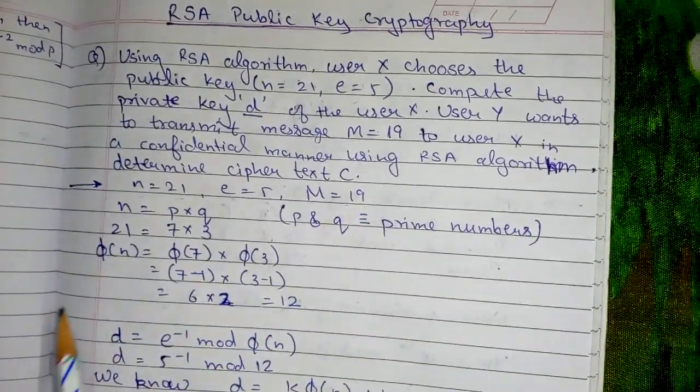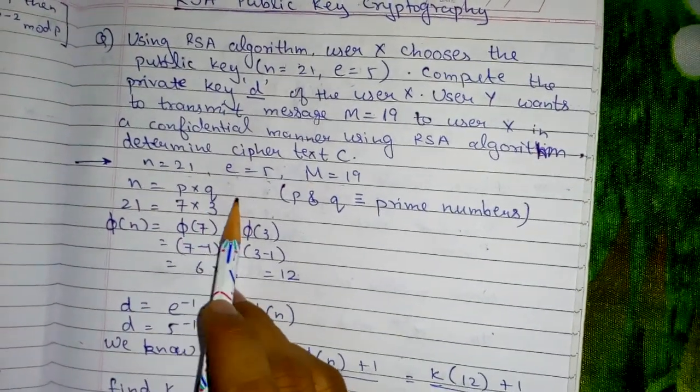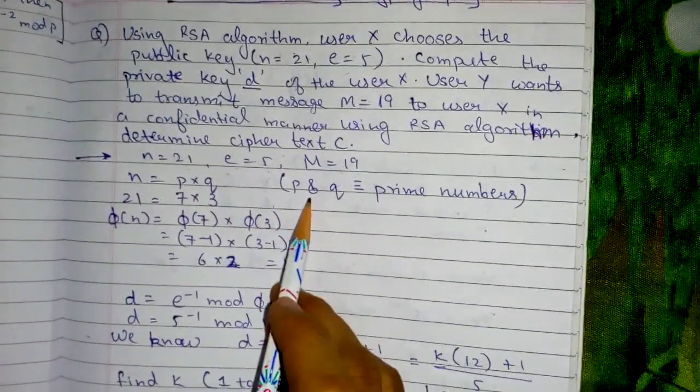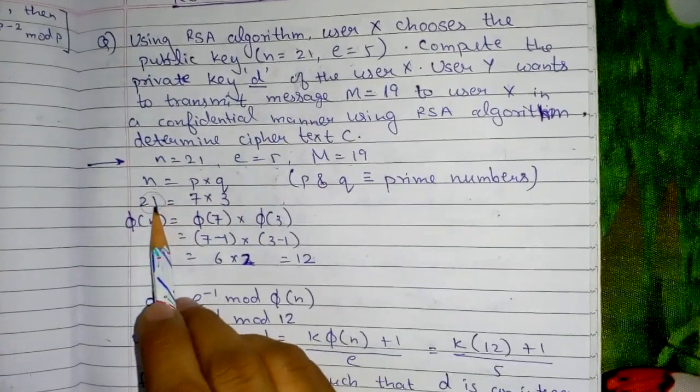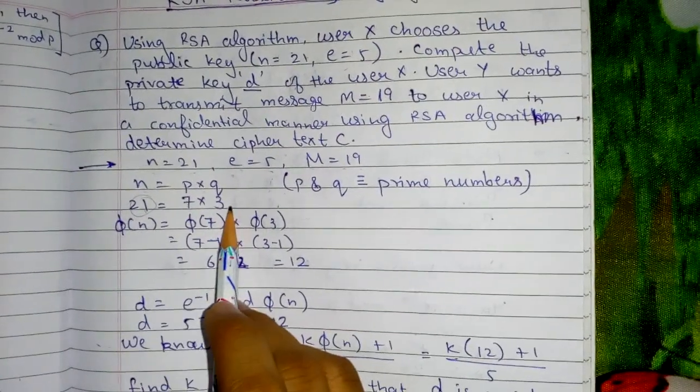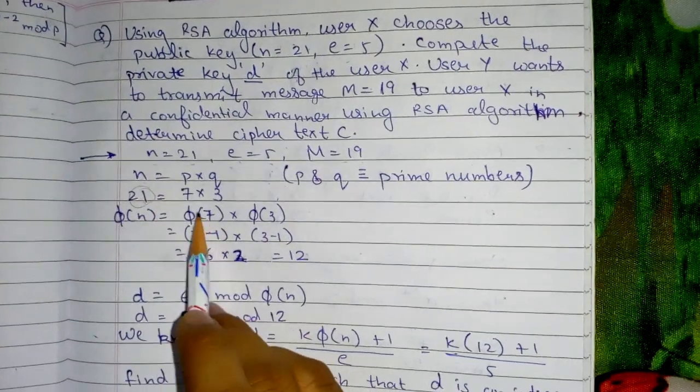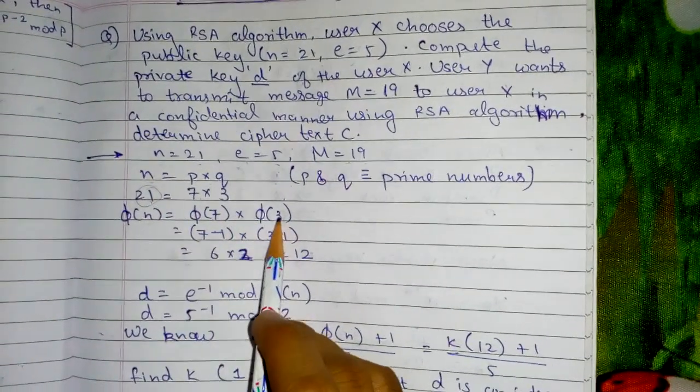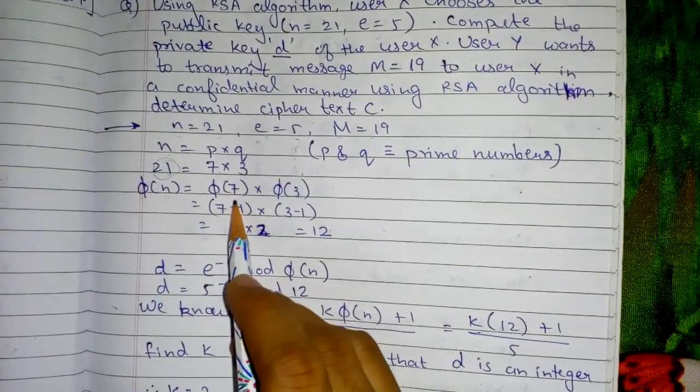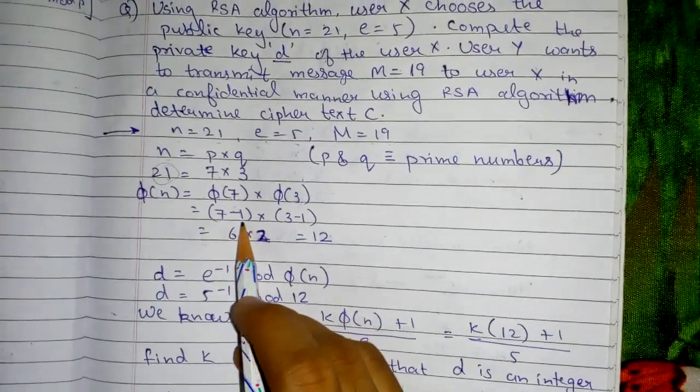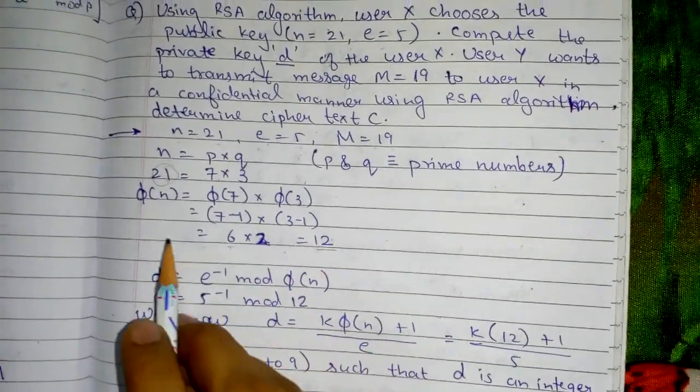We know that n = p×q where p and q are prime numbers. Since n=21, we factor it as 7×3. Now we need to find φ(n). Using Euler's theorem, φ(n) = φ(7)×φ(3). φ(7) = 7-1 = 6, and φ(3) = 3-1 = 2. So 6×2 = 12, therefore φ(n) = 12.